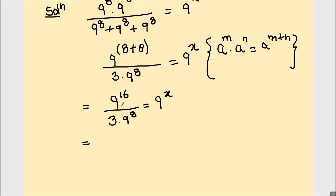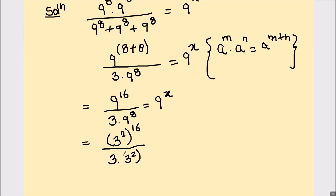Now here 9 can be written as 3 raised to power 2. So we can write it as 3 raised to power 2, whole raised to power 16, because 3 squared equals 9. In the denominator we are going to change this 9 into 3 squared as well — that's 3 squared whole raised to power 8. And 9 raised to power x can also be written as 3 squared raised to power x.